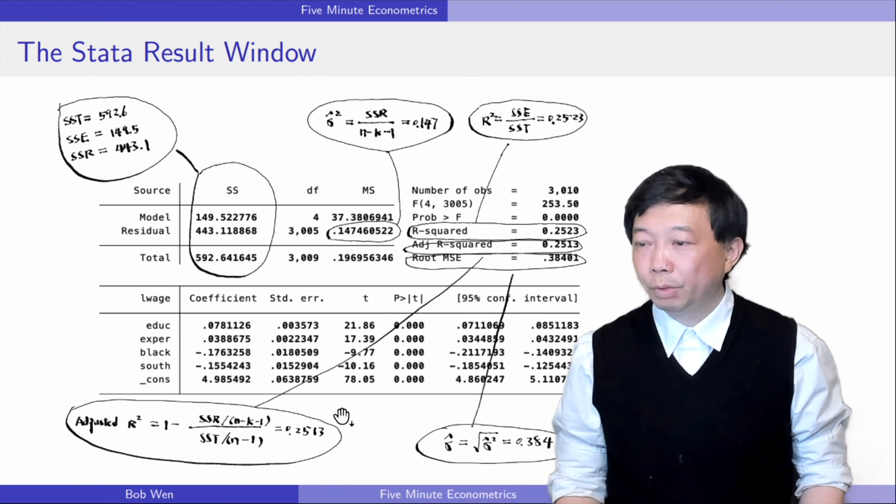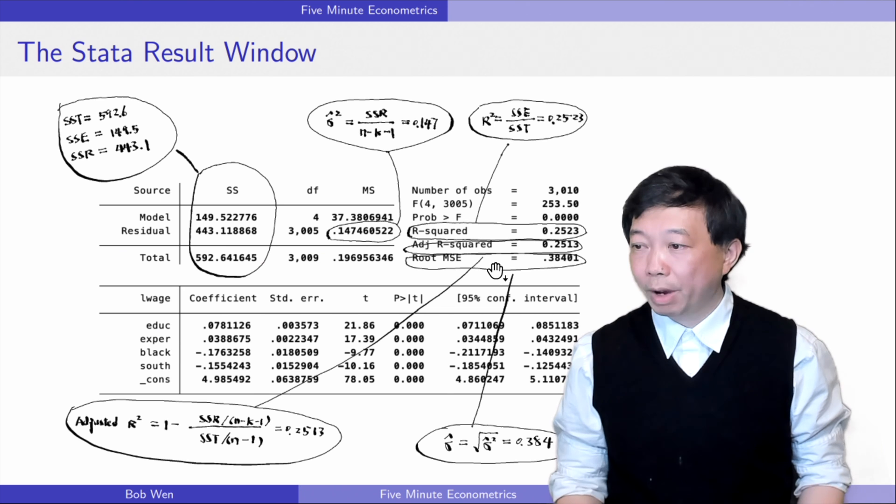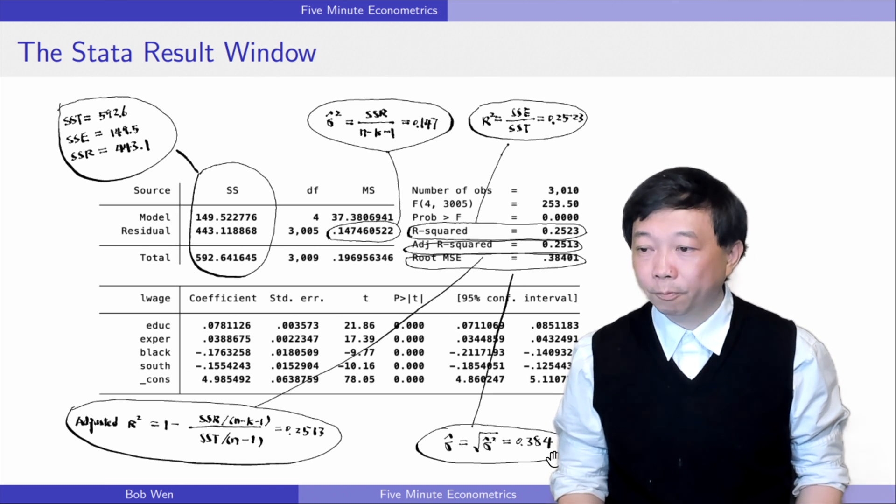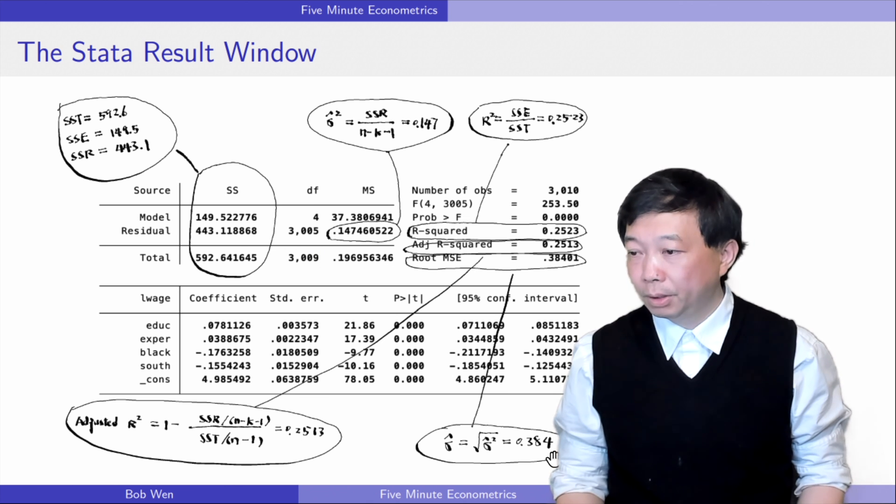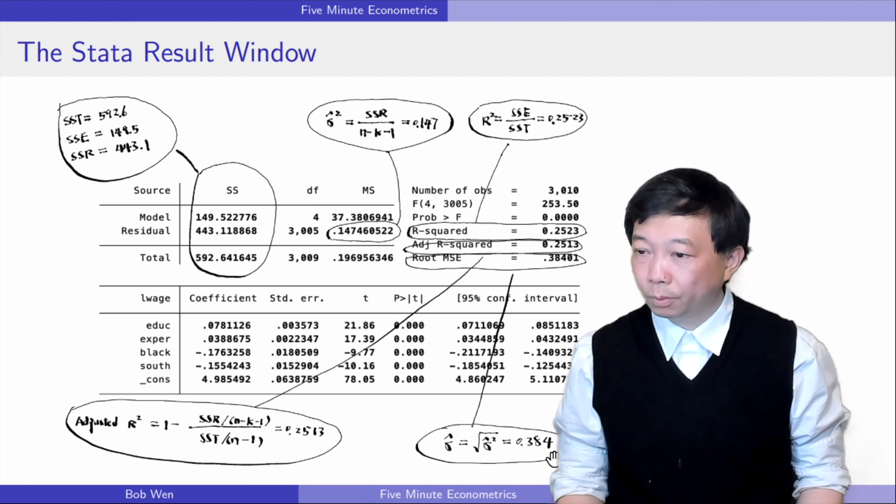Finally, we can find the root mean squared error, which is the square root of the sigma squared hat. In our example, it is 0.384. The root mean squared error is needed when we compute the estimate's standard errors.